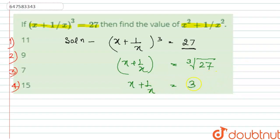3 cubed is 27. After that, we will solve for x square plus 1 by x square.